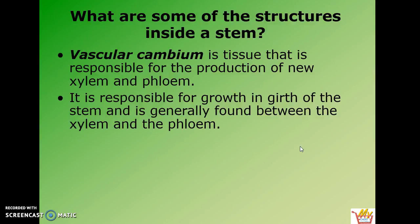The tissue inside the stem that makes new xylem and phloem is called vascular cambium. What this is responsible for is the growth and girth, or the width, of the stem, and generally it's found between the xylem and the phloem.